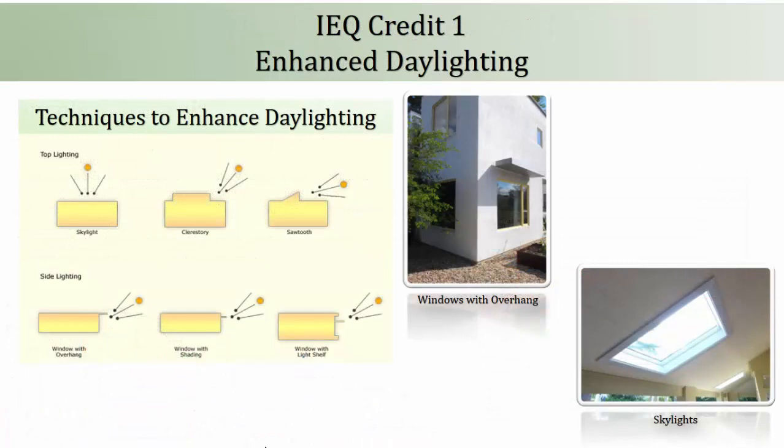Now let's talk about the first credit: IEQ Credit 1, Enhanced Daylighting. This is the first credit of the section and offers a maximum of 4 points. This credit resembles mandatory requirement number 2 — all calculation and simulation approaches are the same, except for the percentage of regularly occupied spaces to be qualified. 2 points will be awarded if 75% of the area achieves the minimum daylighting level requirement, or 4 points if this percentage is more than 95%.